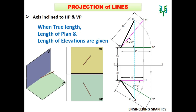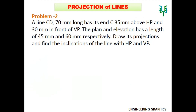This video explains the topic projection of lines with the condition axis inclined to both HP and VP. We are going to discuss a problem when the true length of the line, length of plan, and length of elevation are given. A line CD 70mm long has its end C 35mm above HP and 30mm in front of VP. The plan and elevation have lengths of 45mm and 60mm respectively. Draw its projections and find the inclination of the line with HP and VP.